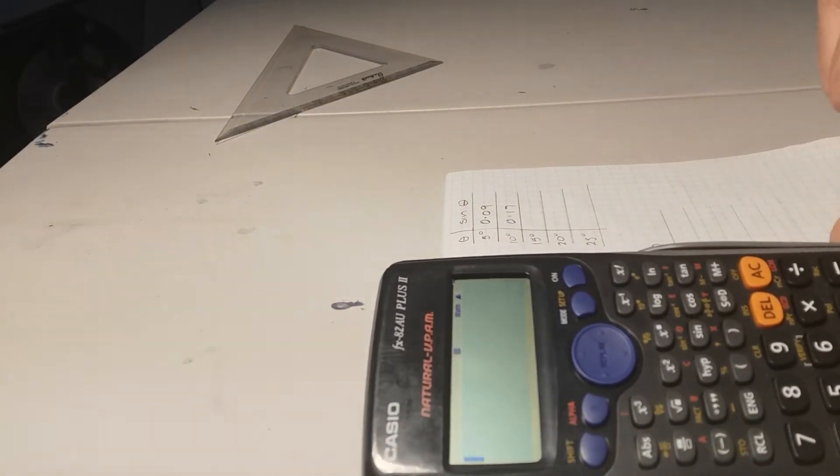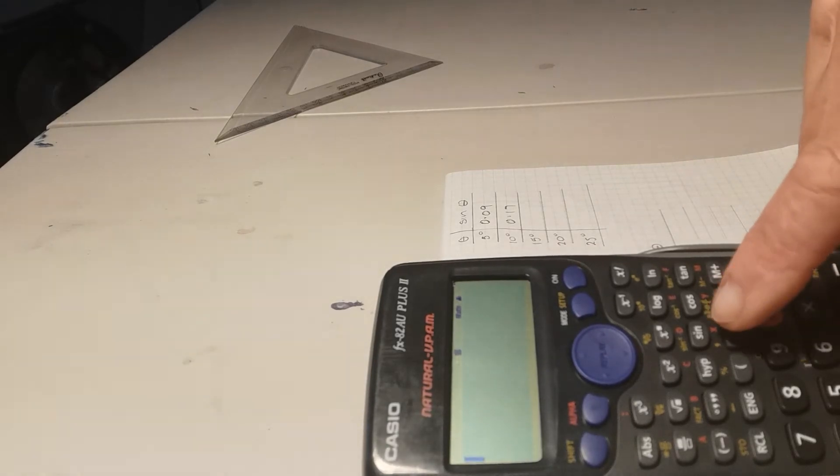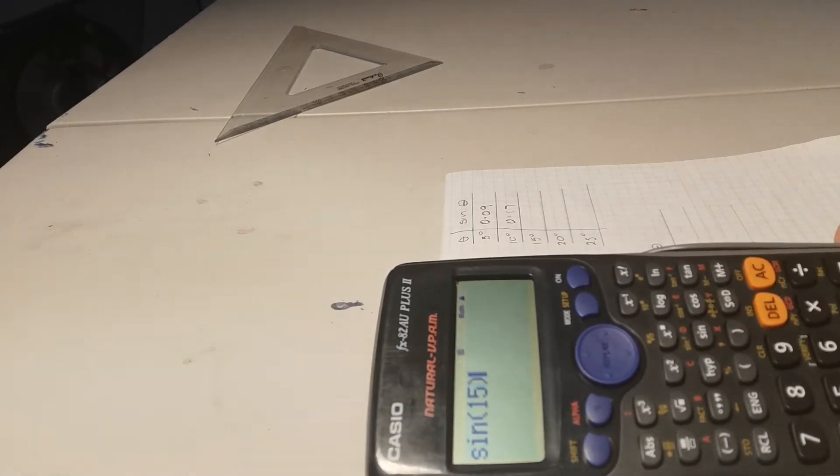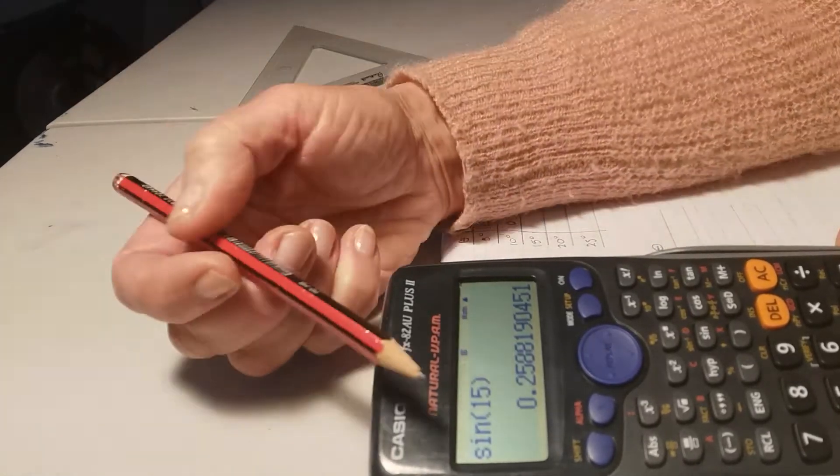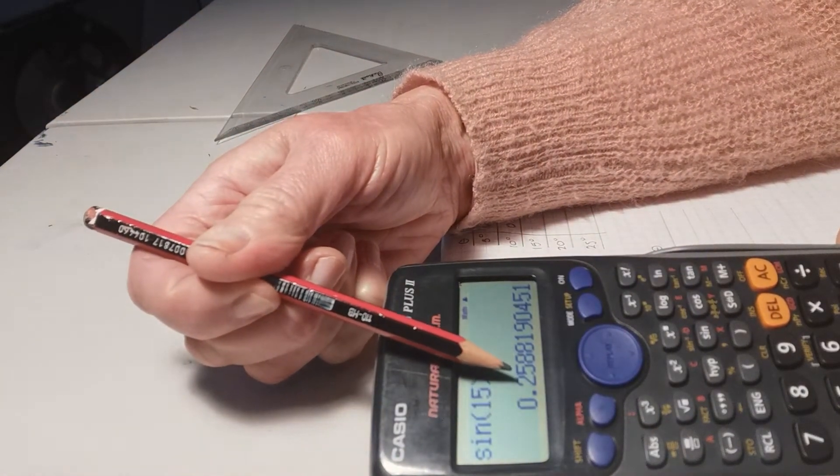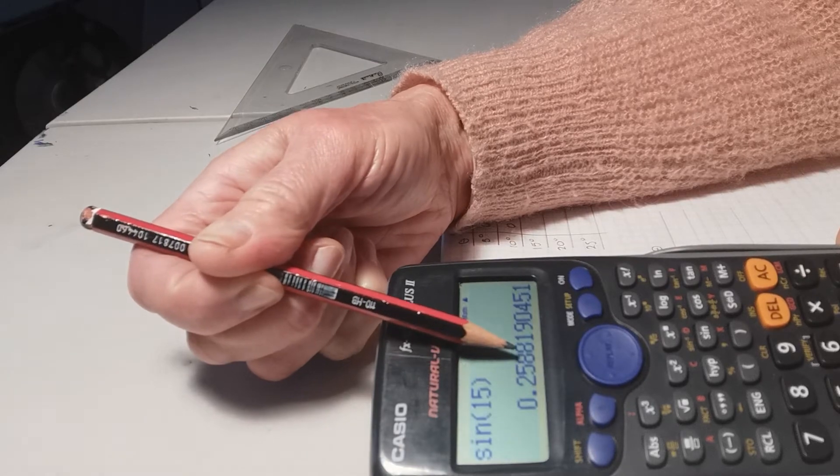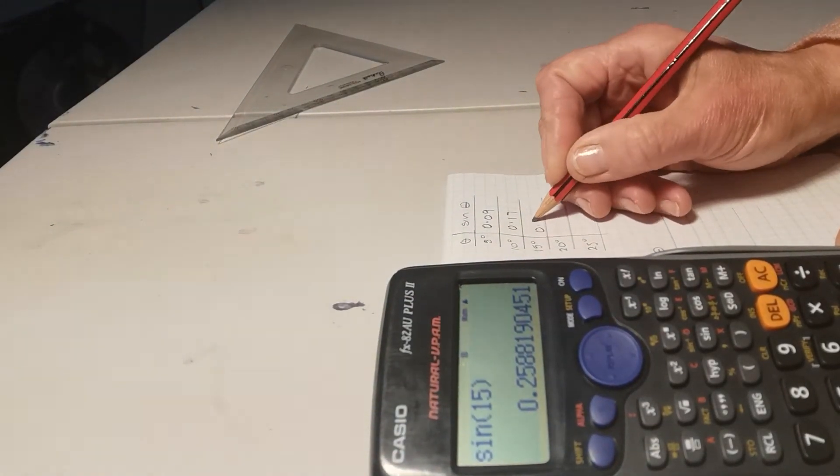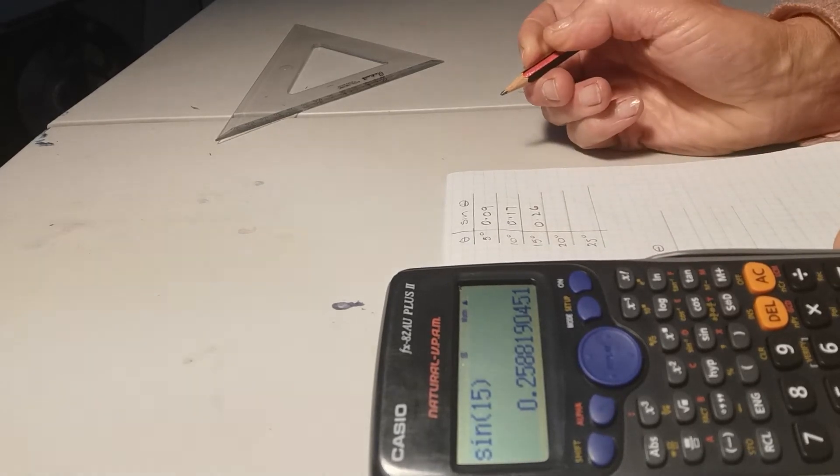Again, clear. Sine of 15 degrees, enter, is 0.258. So that would round to 0.26. Still not quite there.